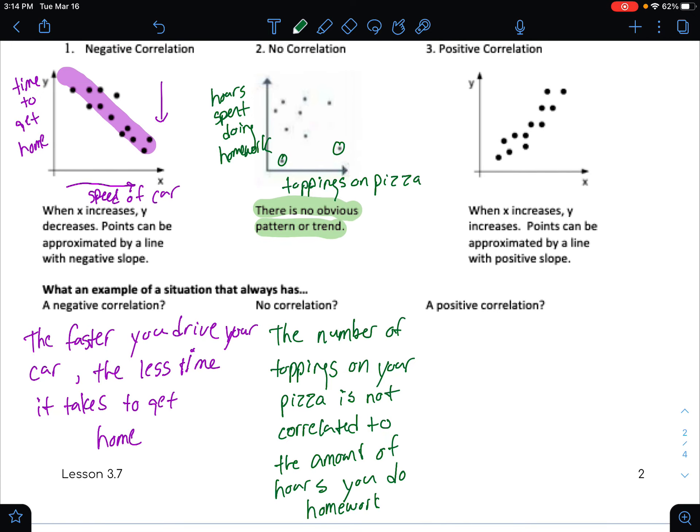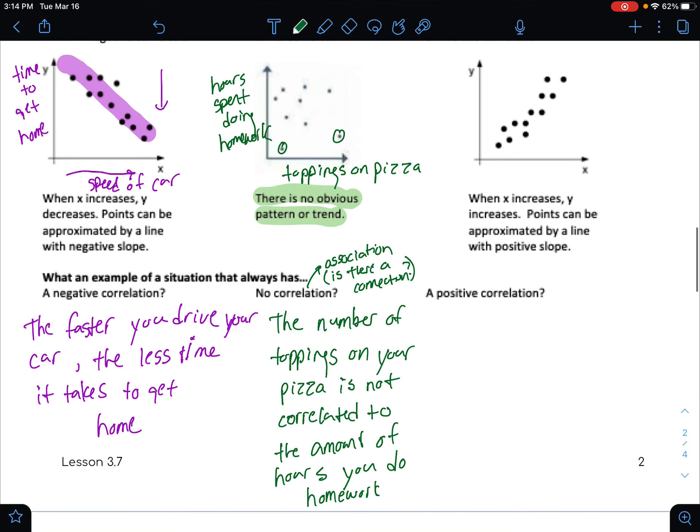This word correlation is kind of like the word we used at the beginning of the unit called association and it's essentially are they connected together? Is there a connection? Is one related to the other? Does one affect the other? That's really what we're talking about with the correlation here.